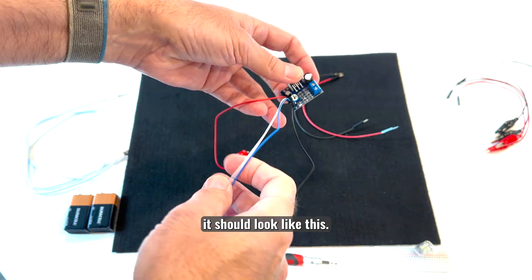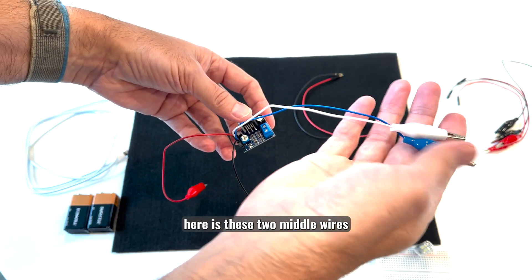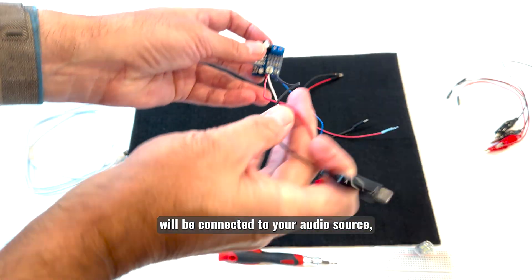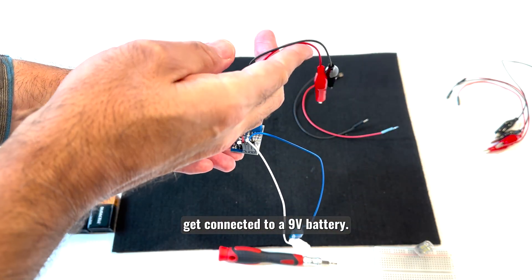When you're done it should look like this. Big idea here is these two middle wires will be connected to your audio source, and the outer two wires get connected to a 9V battery.